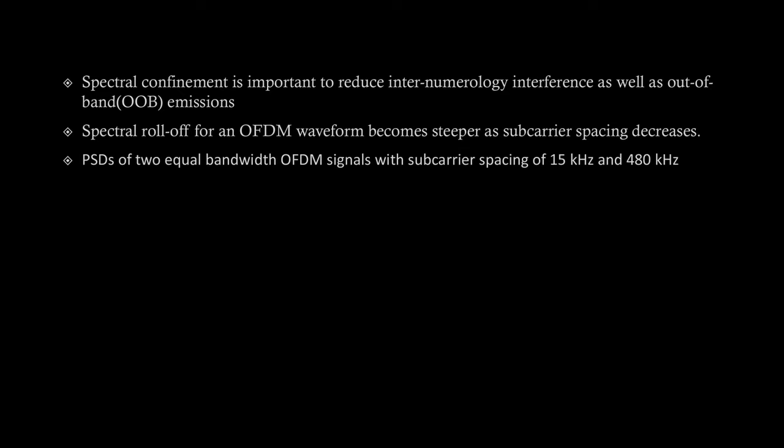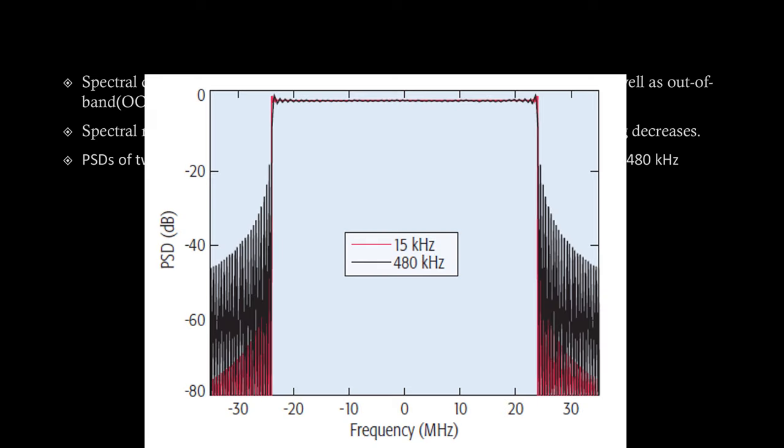We will show the PSDs of two equal bandwidth OFDM signals with subcarrier spacing of 15 kHz and 480 kHz. Here we can see that spectral roll-off for 15 kHz waveform is relatively more steeper than 480 kHz waveform. You can see here in this the difference between this black colored waveform which is for 480 kHz and this red waveform which is for 15 kHz. So, this is again a plus point for narrower subcarrier spacing waveforms.